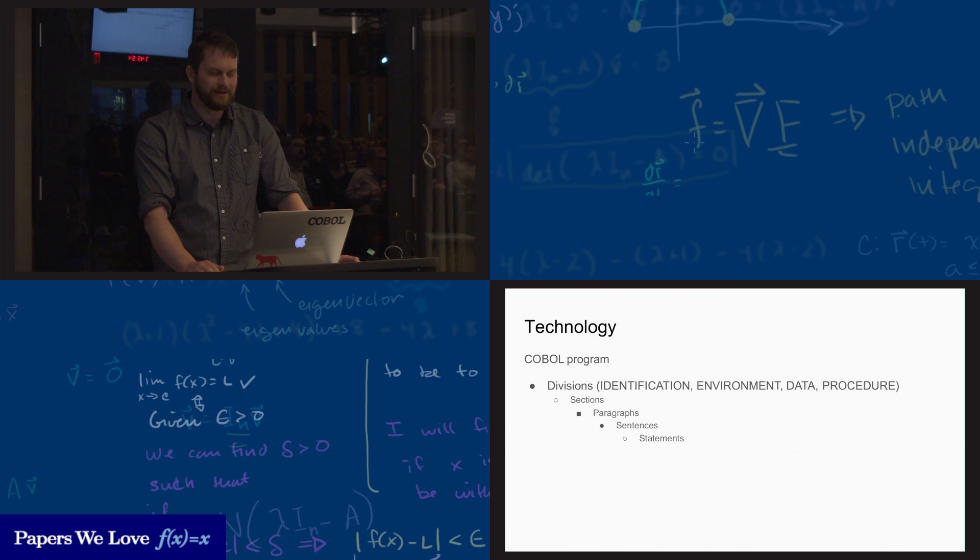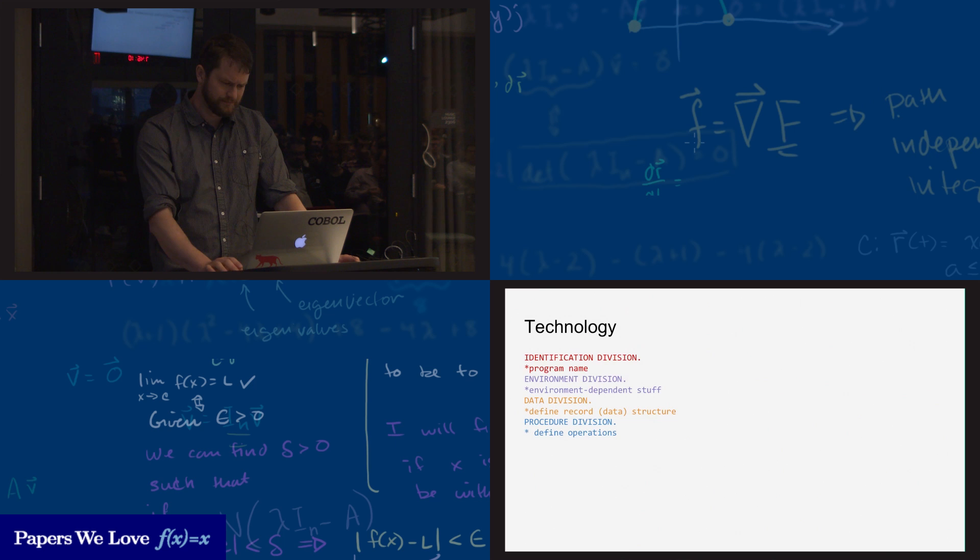COBOL programs are hierarchical. There are four divisions in a program: the identification, environment, data, and procedure divisions. Each division has some sections. Sections can have paragraphs. Paragraphs are made up of sentences, and sentences contain statements.